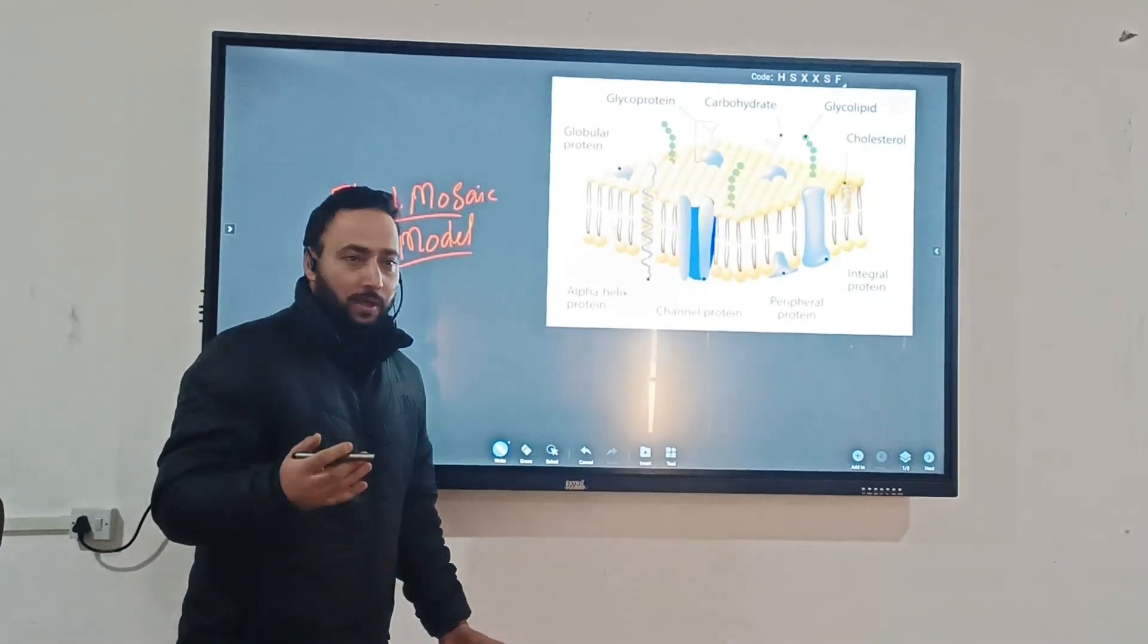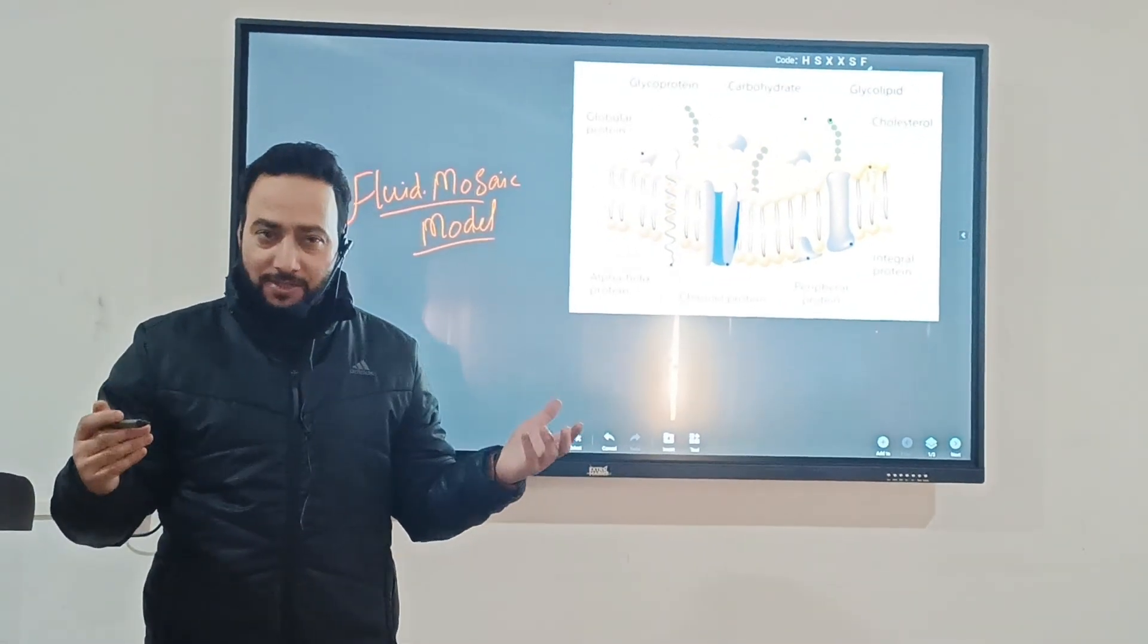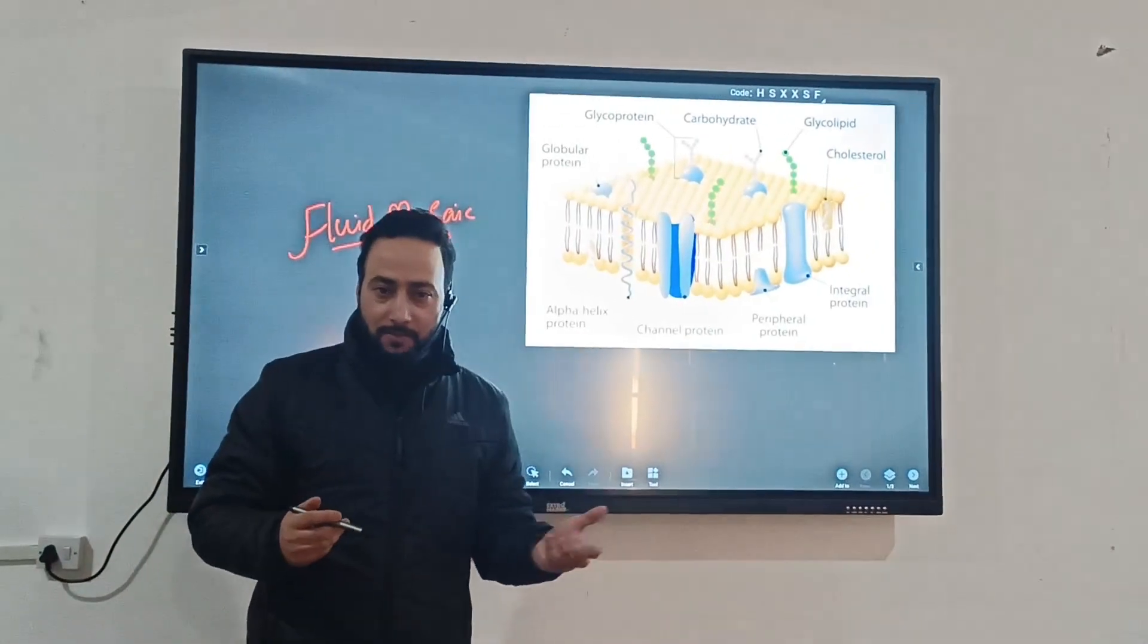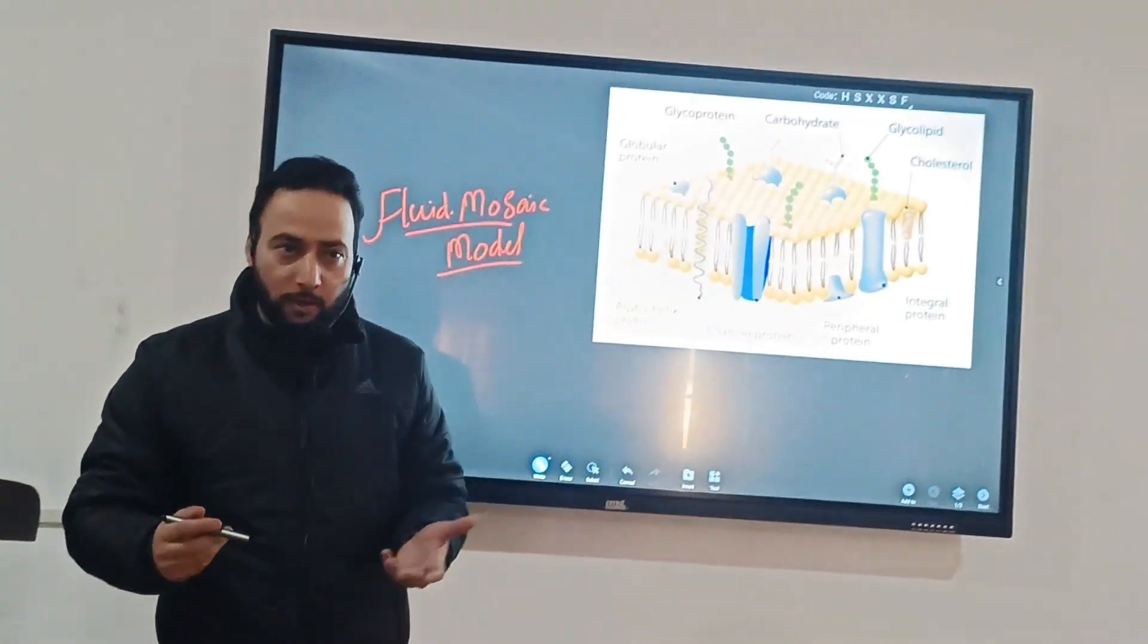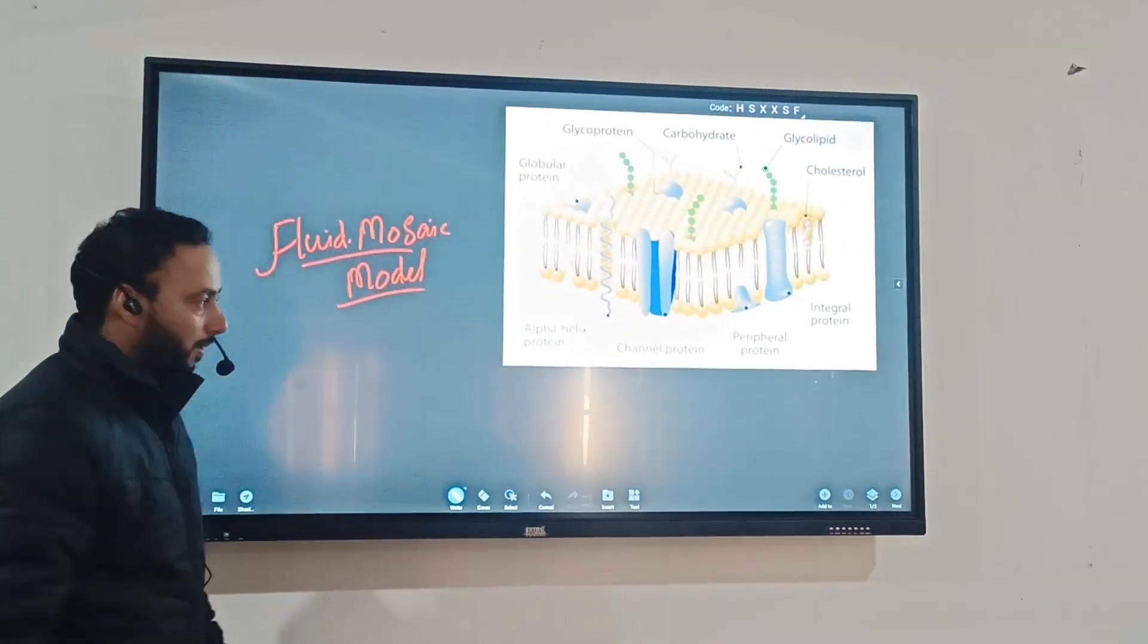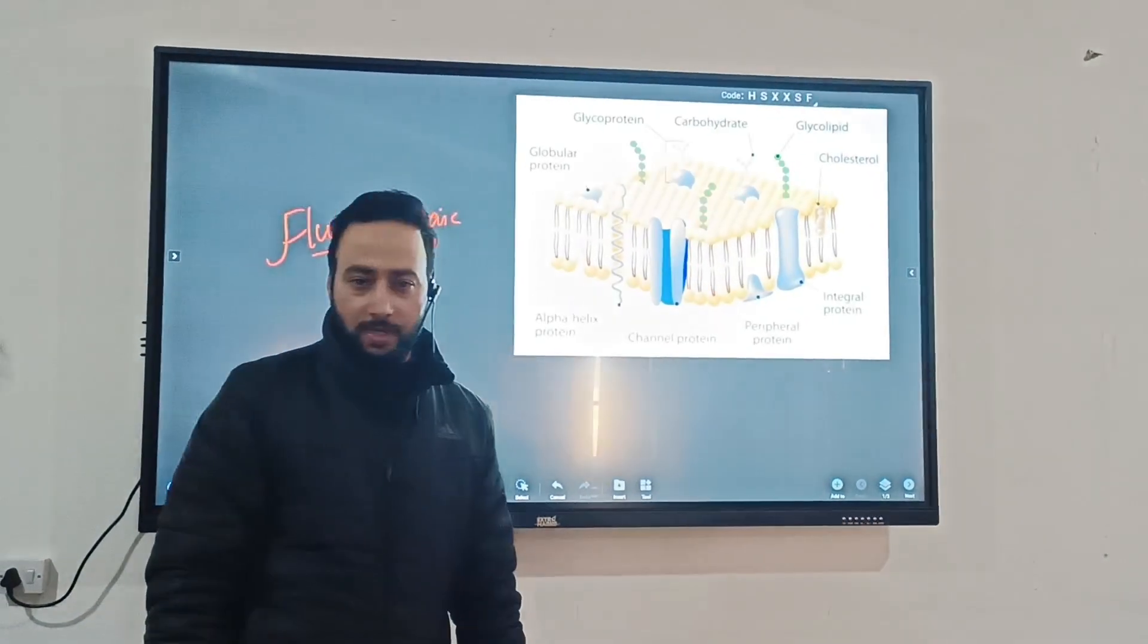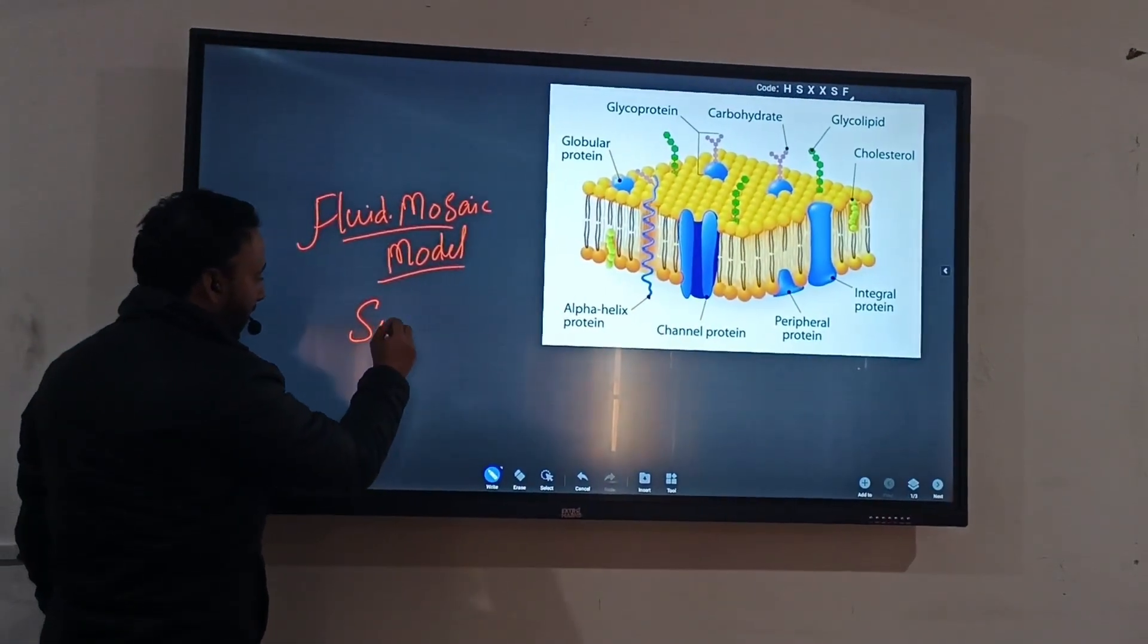Earlier there were a number of models which described this plasma membrane as an entity. For example, there was the Danielli and Davson model, then there came another model, Robertson model, and we call that as unit membrane model.